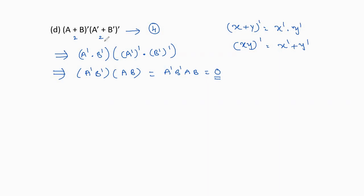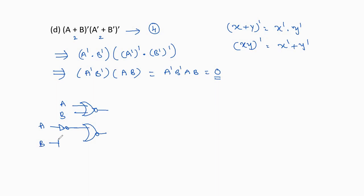For the given Boolean expression, the logic diagram needs a NOR gate (a + b)', two NOT gates for a' and b', and an AND gate — totaling 5 logic gates. Whereas for the simplified Boolean expression, its value is 0, so no logic gate is required at all.